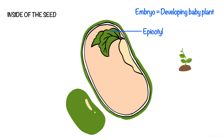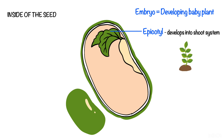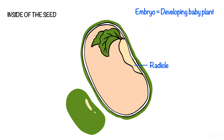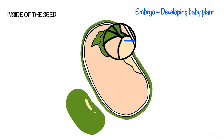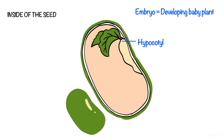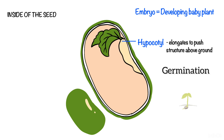The developing green structure is called the epicotyl, which over time develops into the plant's shoot system. The radicle develops into the plant's root system. The area between the epicotyl and the radicle is called the hypocotyl, which elongates to push the growing shoots outside the ground and serves a very important role in germination.